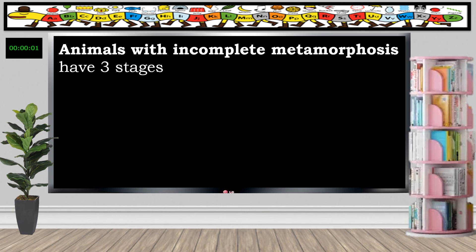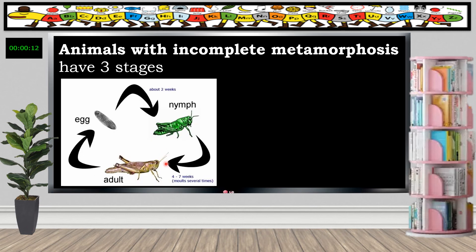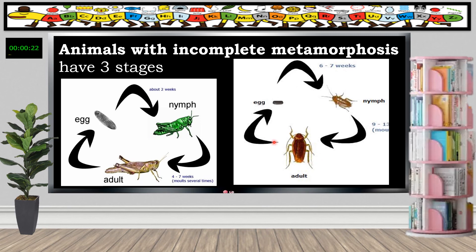Here are examples of animals with incomplete metamorphosis. When we say incomplete metamorphosis, it has three stages. For example, the life cycle of the grasshopper goes from egg to nymph to adult. As you observe, the nymph almost looks like the adult.